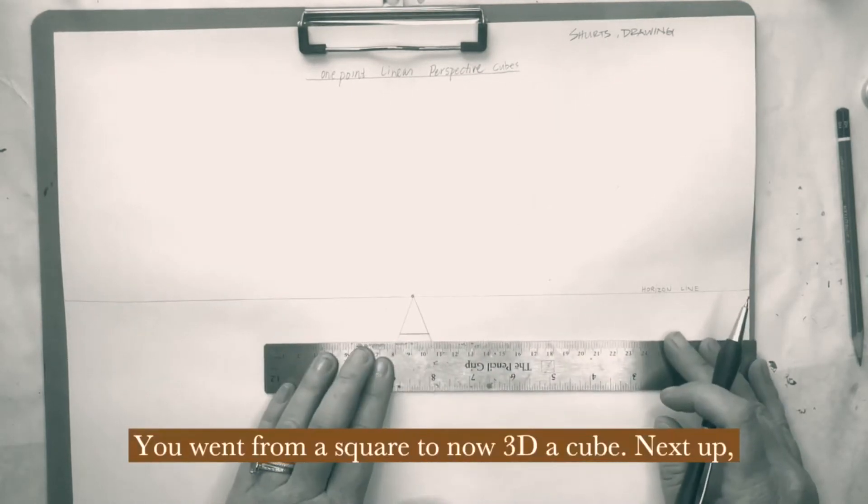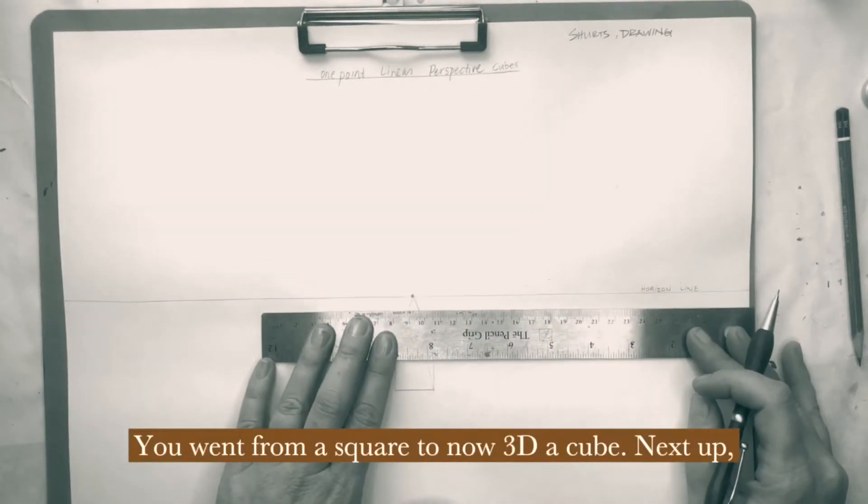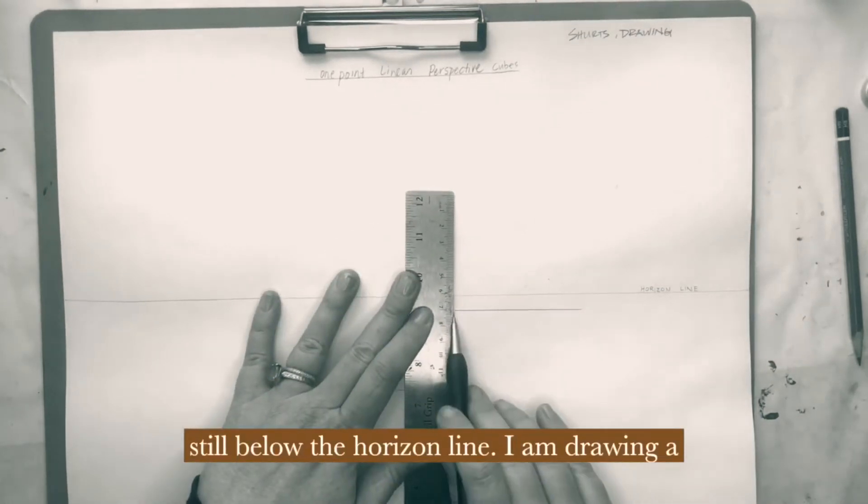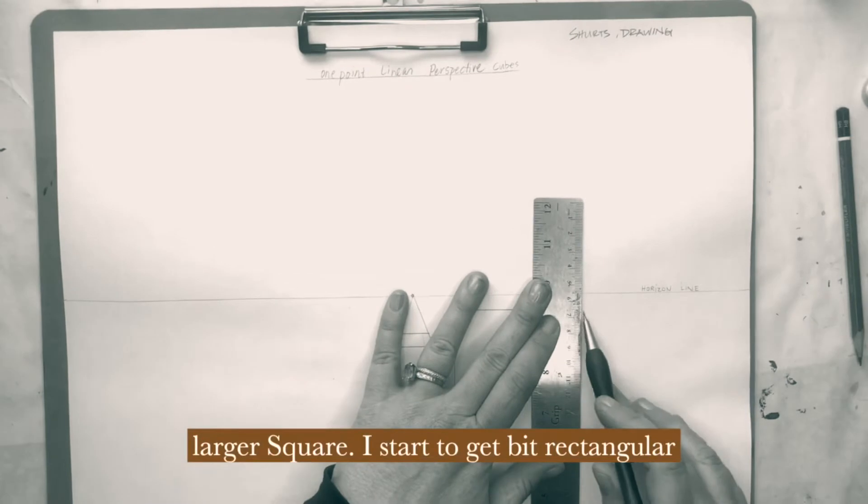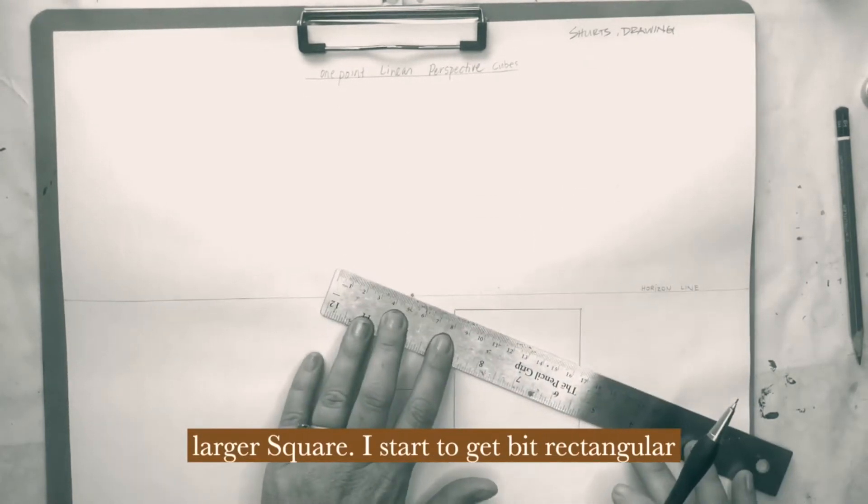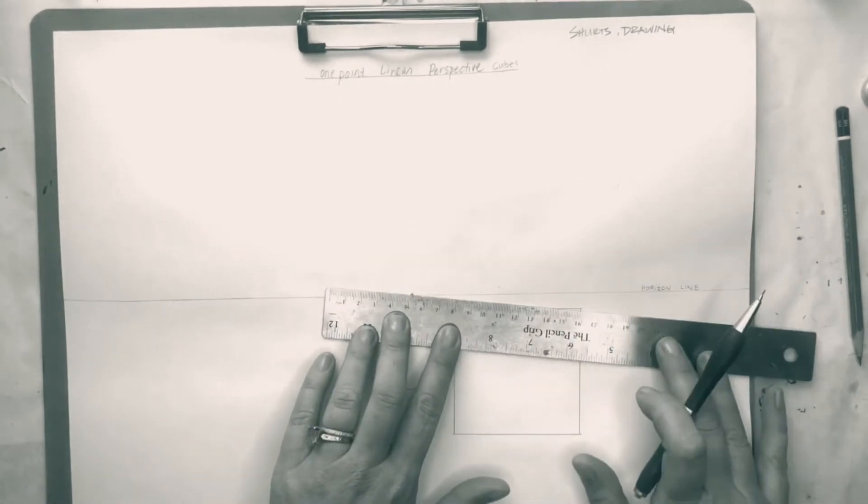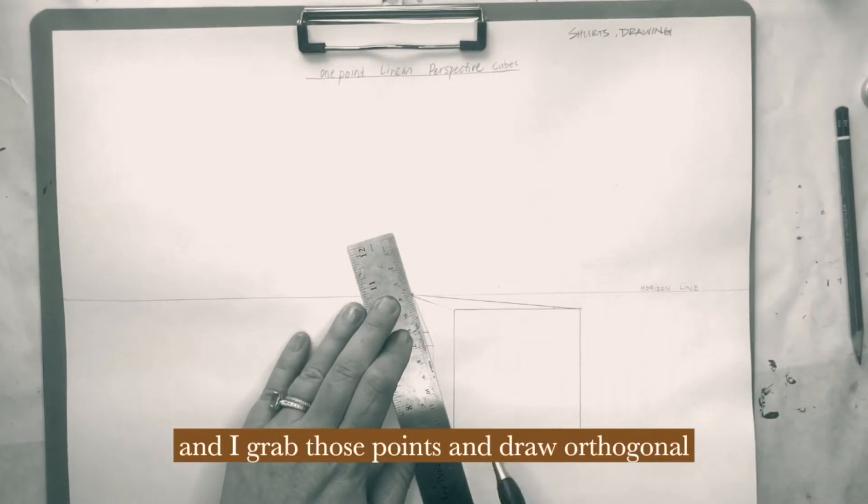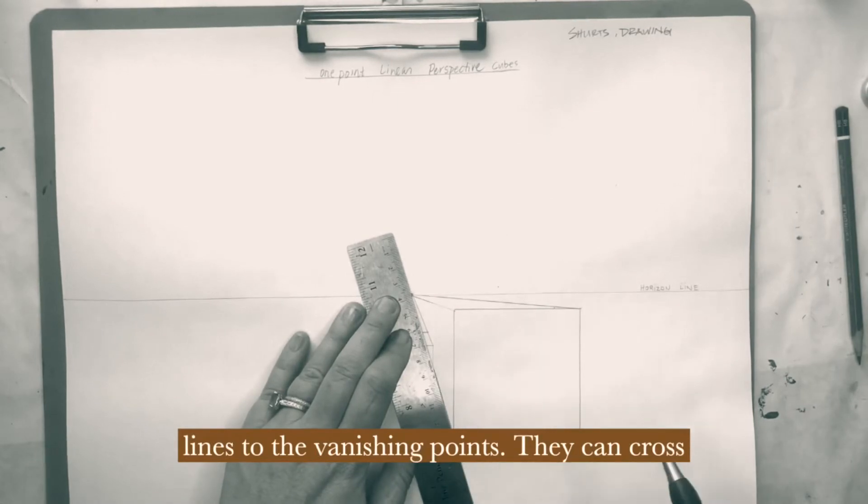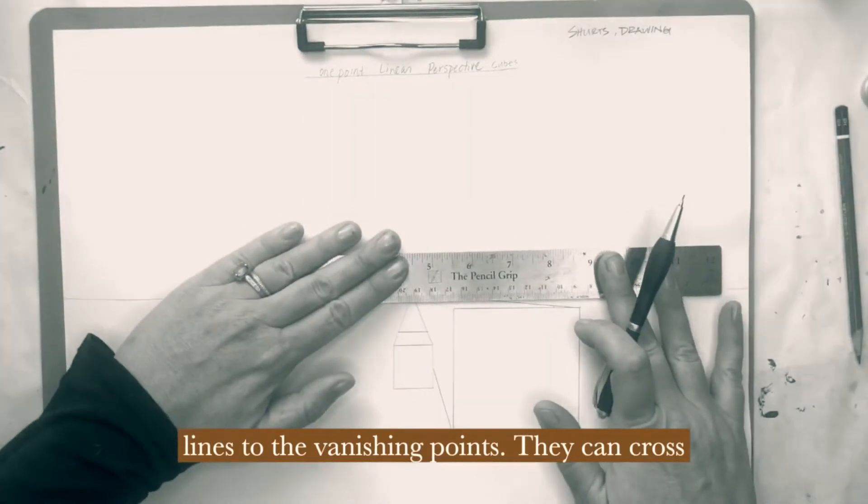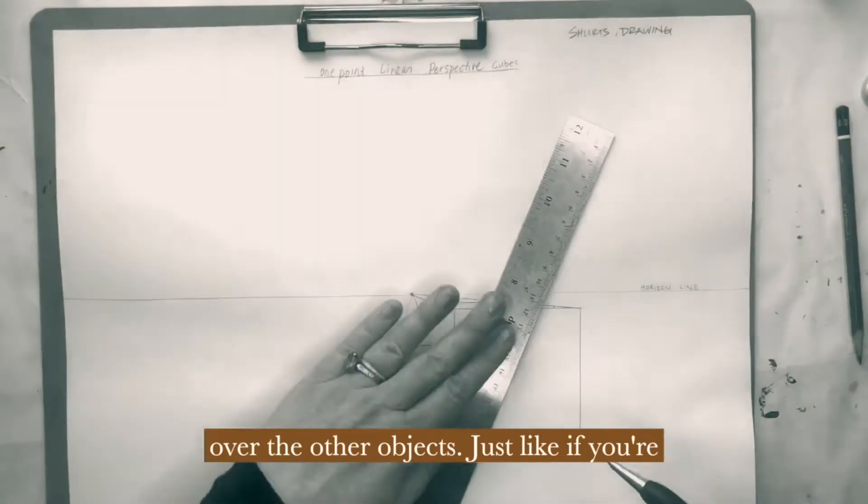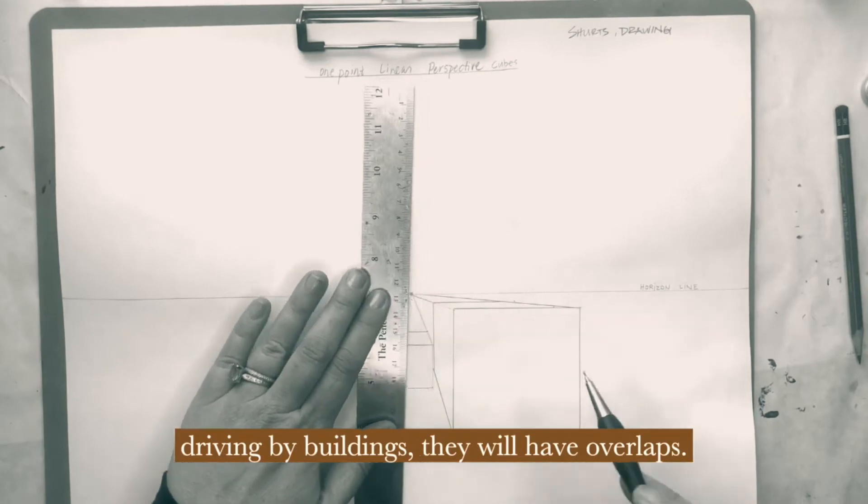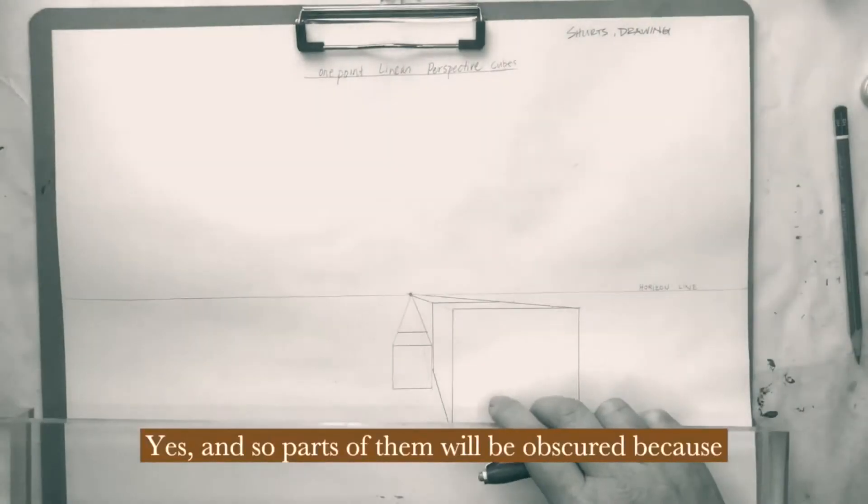Next up, still below the horizon line, I am drawing a larger square. I start to get a bit rectangular. And I grab those points, and draw orthogonal lines to the vanishing point. They can cross over the other objects, just like if you're driving by buildings, they will have overlaps. And so parts of them will be obscured because of another object, because of your perspective, where your eyes are seeing the world.